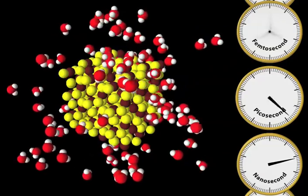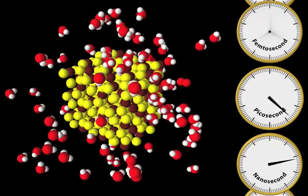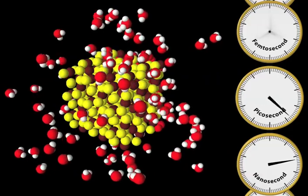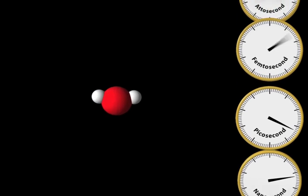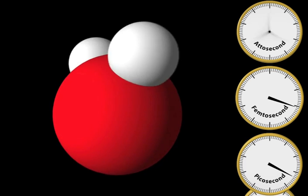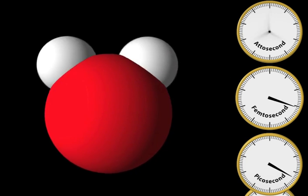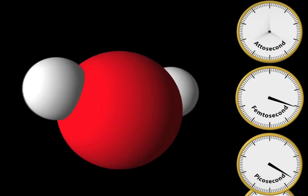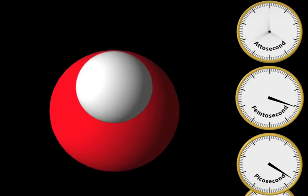At this point, we've already slowed things down one trillion times. But believe it or not, there are things going on here that are even faster. Let's focus on a single water molecule. We have slowed things down another thousand times to look at the motion of this water molecule. This is H2O. The white hydrogen atoms vibrate around the red oxygen atom. The oscillation happens in mere femtoseconds, or a quadrillionth of a second.